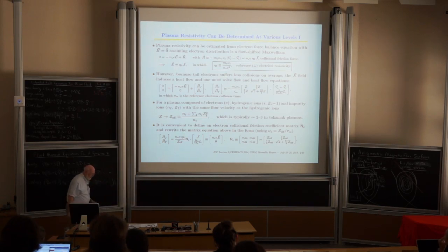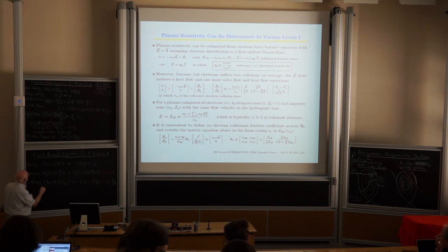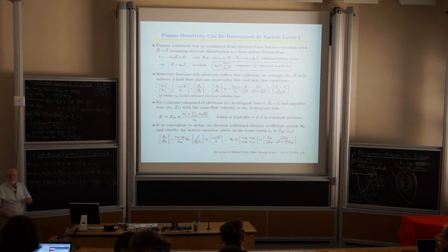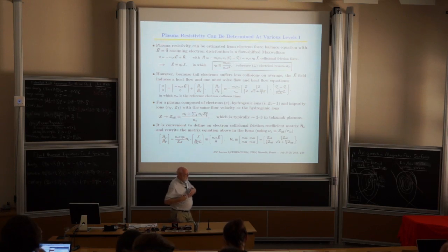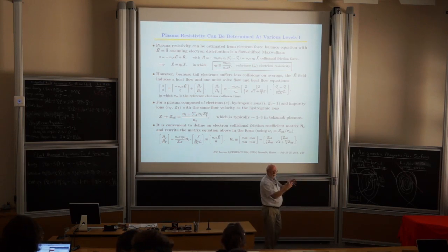Resistivity is also affected. Looking at Ohm's law and taking B·E: we have the parallel electric field, the Spitzer friction current, and now this viscous dissipation on the same scale. Instead of Spitzer resistivity along a uniform field, because I'm moving along a field line that goes from outside where B is small to inside, there's viscous dissipation on the collision timescale.